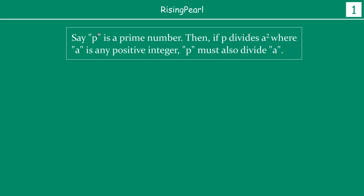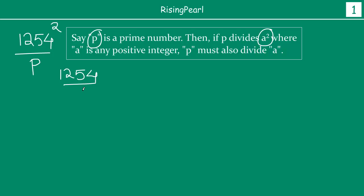So what was the theorem that we saw in the last video? The theorem went like this: say p is a prime number, then if p divides a squared, where a is any positive number, then p must also divide a. So in short, if a is any positive number and we square it, and p is a prime number such that this number is divisible by p — remainder is 0 — then a is also divisible by p. We went through the whole proof of why this is absolutely true in the last video.